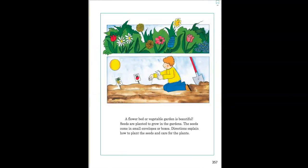A flower bed or vegetable garden is beautiful. Seeds are planted to grow in the gardens. The seeds come in small envelopes or boxes. Directions explain how to plant the seeds and care for the plants.